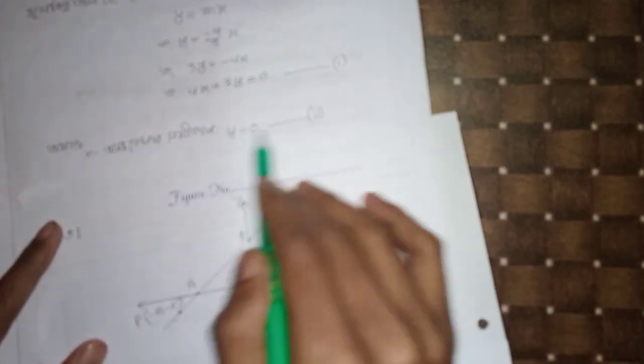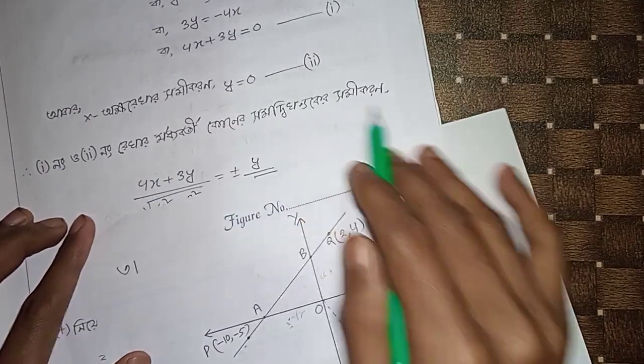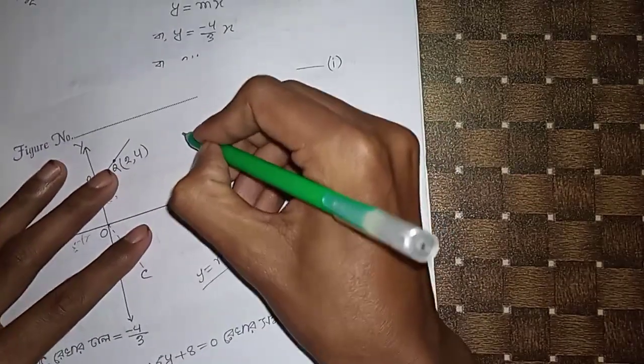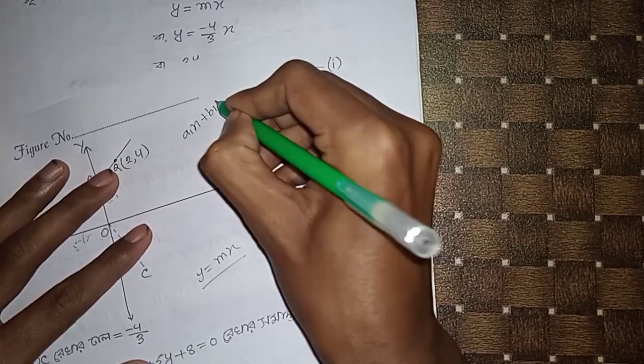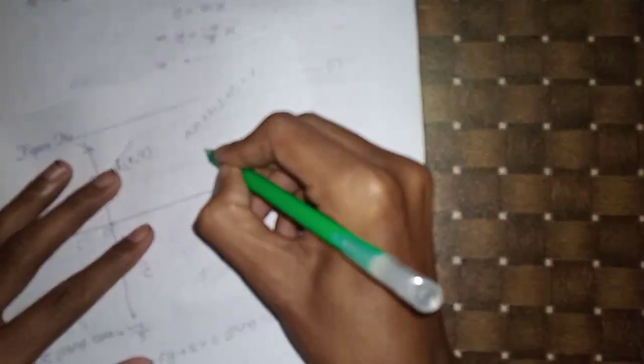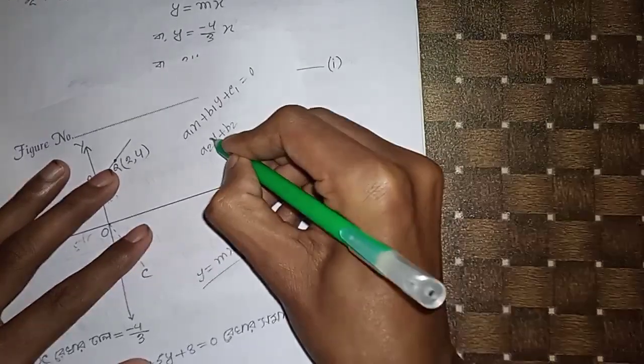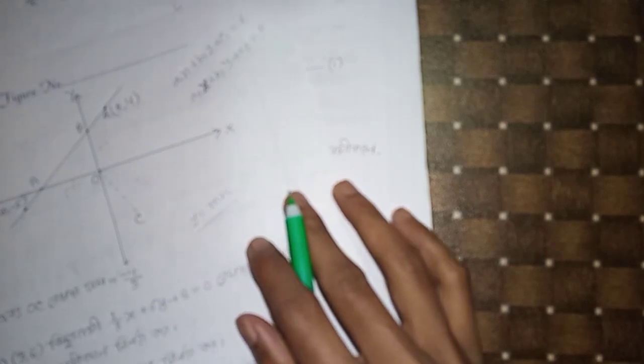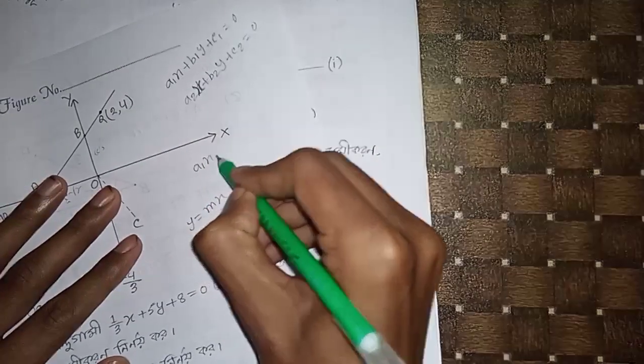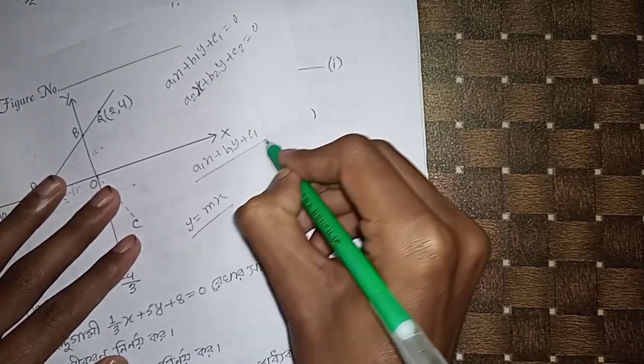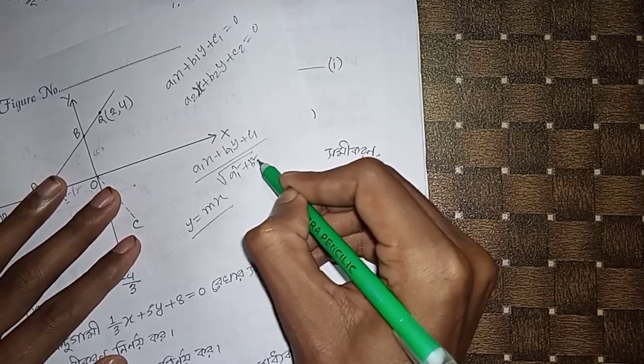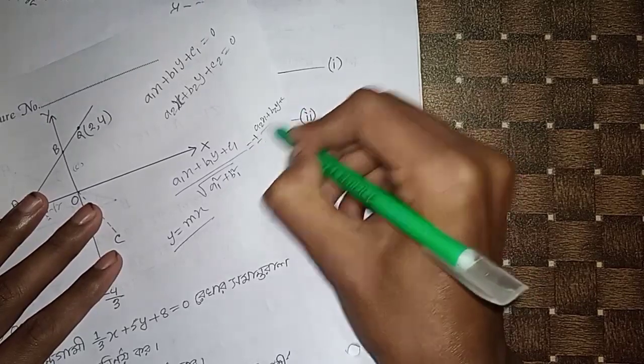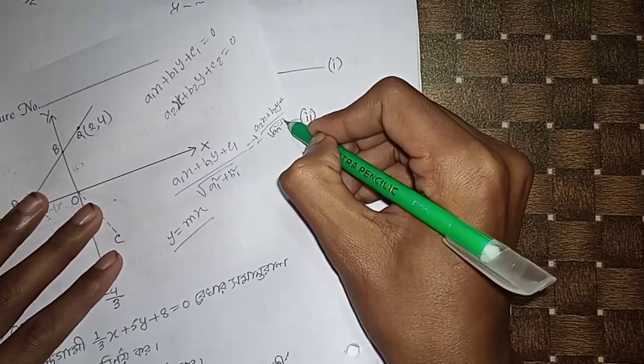I am going to y equal to 0. I am going to y equal to a1x plus b1y plus c equal to 0. So I am going to y plus b2y plus c equal to 0. I am going to a1x plus b1y plus c1 divided by root over a1 squared plus b1 squared equal to plus minus a2y plus b2x plus b2y plus c2 divided by root over a2 square plus b2 square.